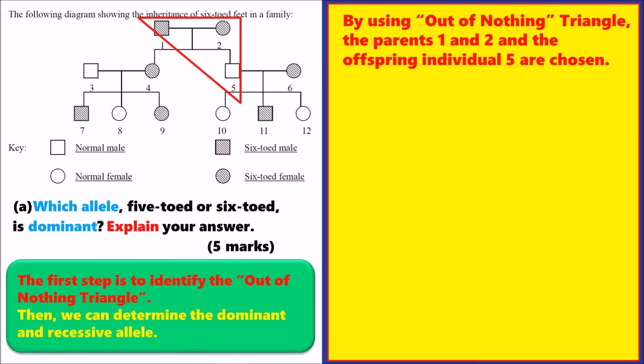We deal with Part A first. The first step is to identify the out of nothing triangle, then we can determine the dominant and recessive allele. Remember that we have to use logical expression when deducing the dominant and recessive allele. I will introduce the thinking logic, which acts like guiding questions to help us construct our knowledge in genetics.